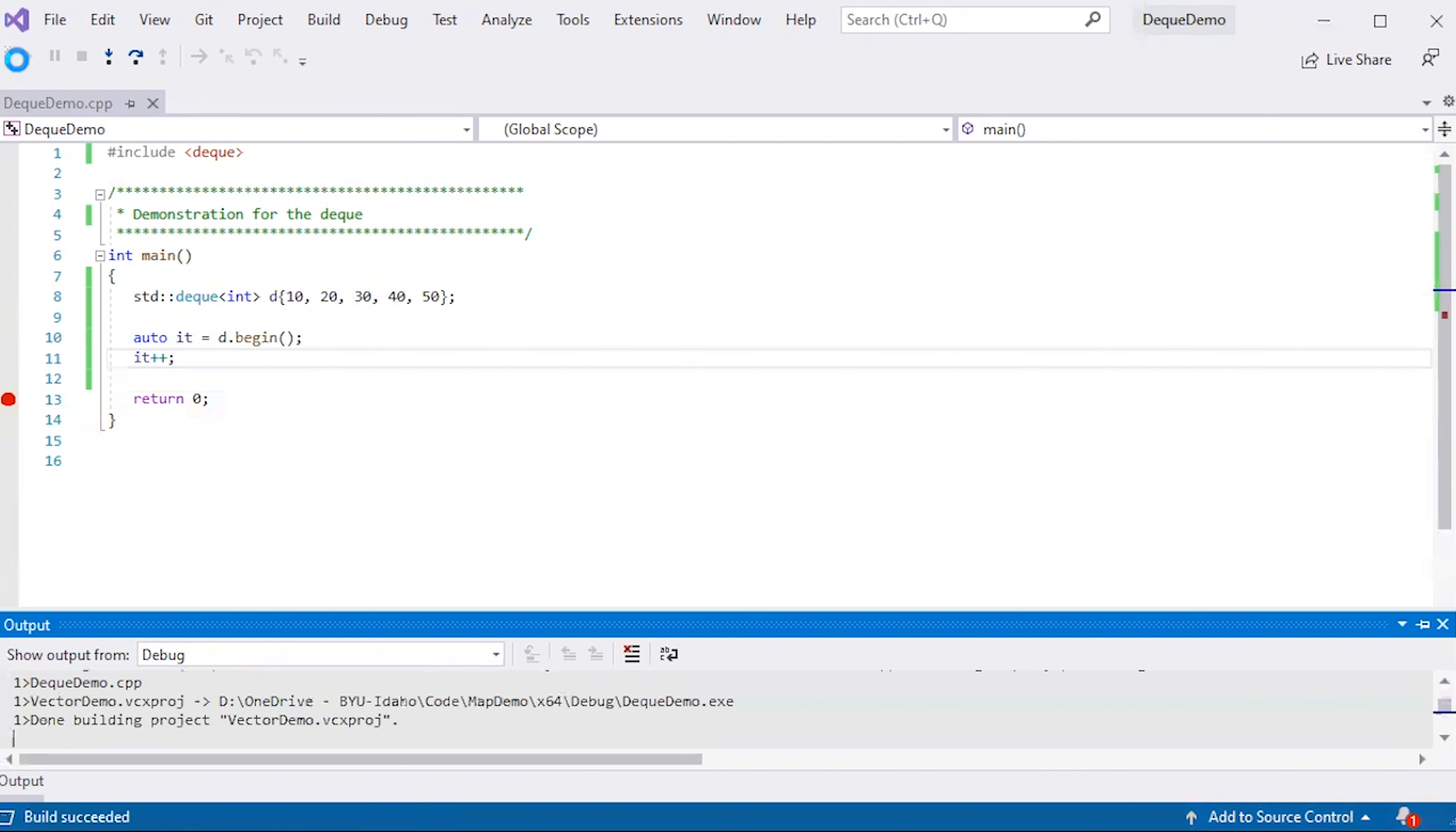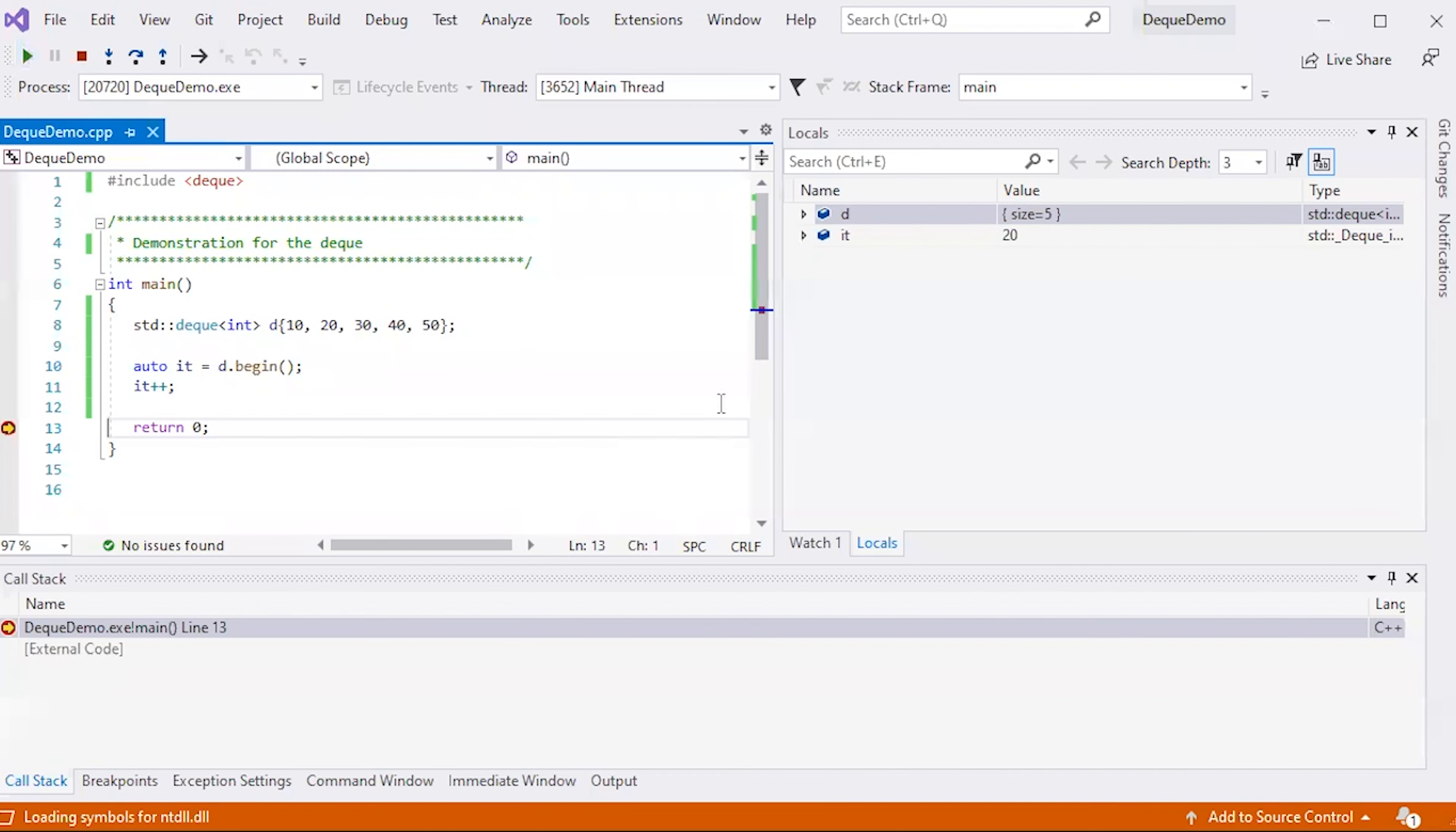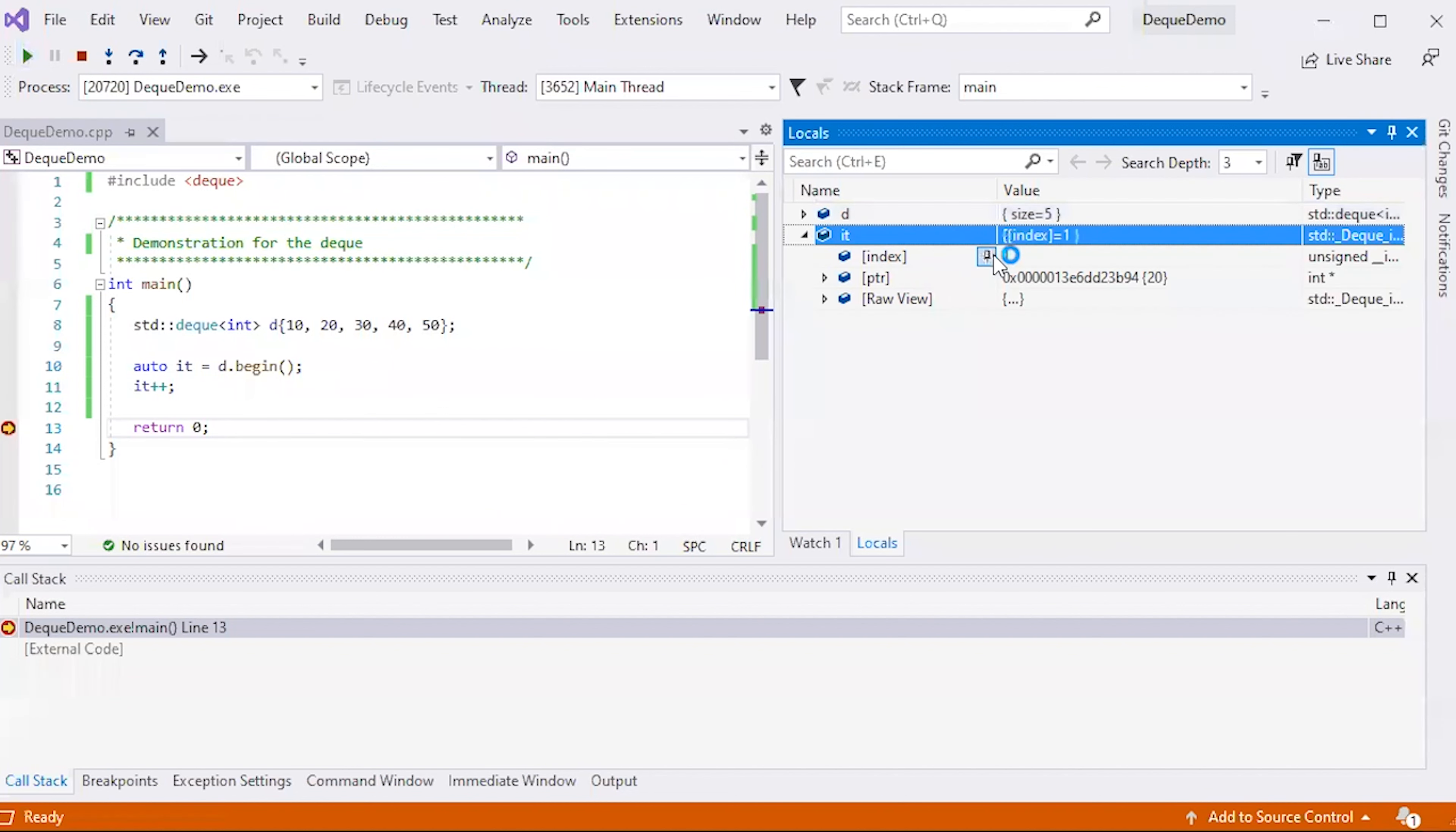And when I break into the debugger, sure enough, what am I going to see? I'm going to see in our iterator the index as well as a pointer to the deck itself. So we're definitely on the right track.